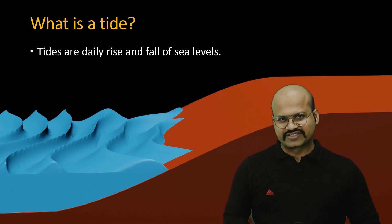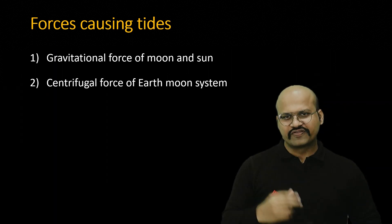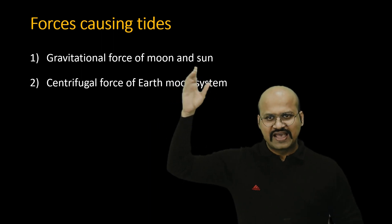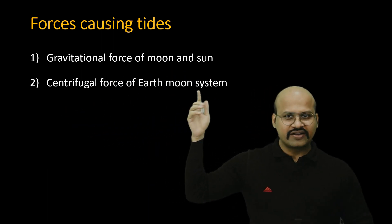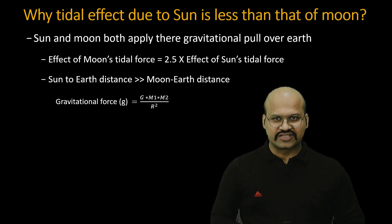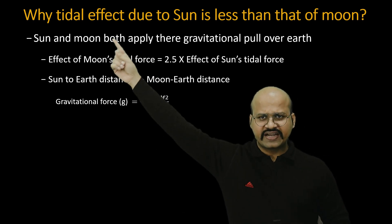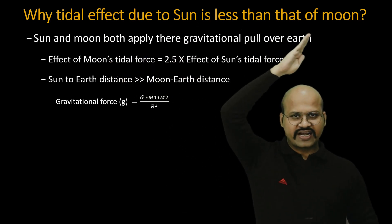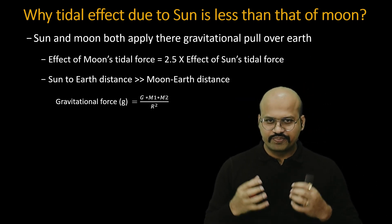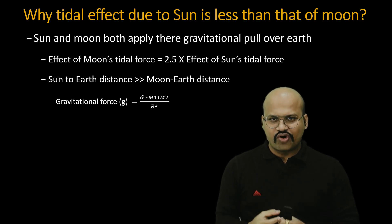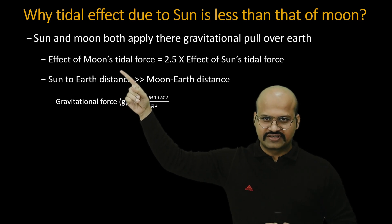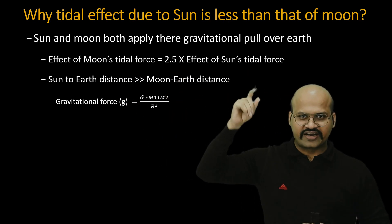What are the forces that cause these tides? There are two major forces. The first is the gravitational force of the moon and sun, and the second is the centrifugal force of the earth-moon system and earth-sun system. The tidal effect due to the sun is less than the tidal effect of the moon, even though both apply a gravitational pull on the earth. The moon's tidal force is 2.5 times the effect of the sun's tidal force.